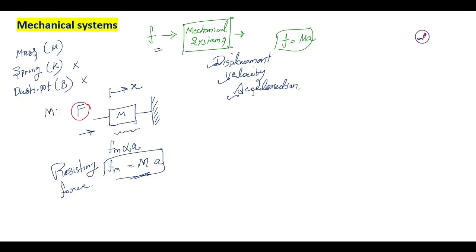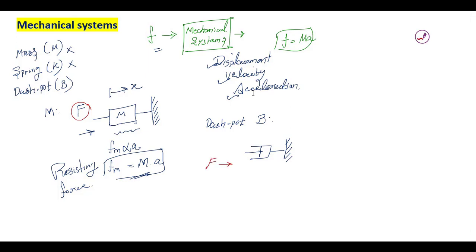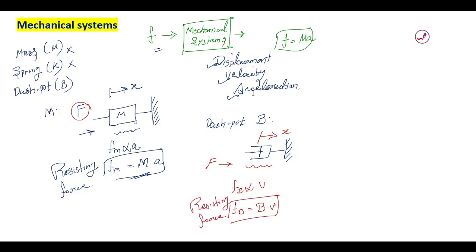Considering the ideal damper element — its symbolic representation is a dashpot fixed to a reference — and neglecting the effects of mass and spring: when a force is applied on the dashpot, there is a displacement in the direction of the force, and the resisting force F_B is directly proportional to velocity. Taking the proportionality constant: F_B = B times velocity.